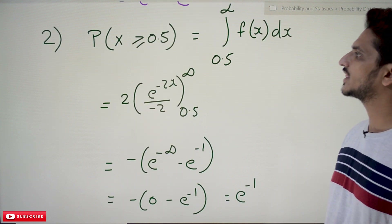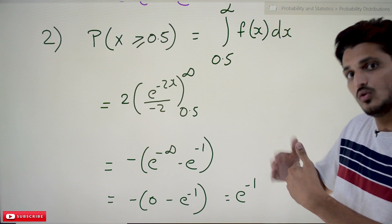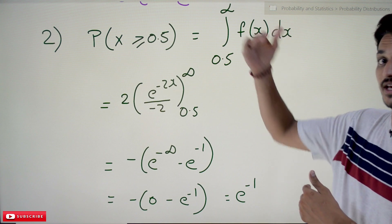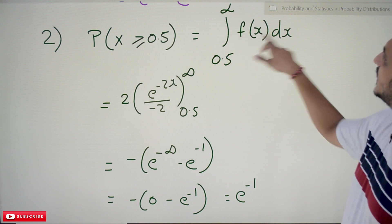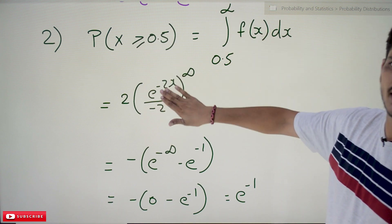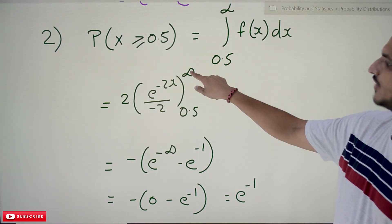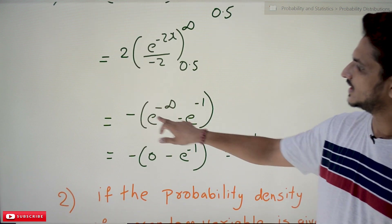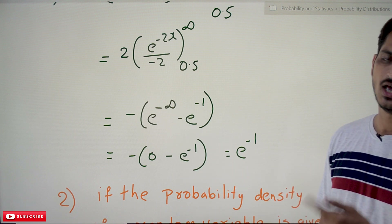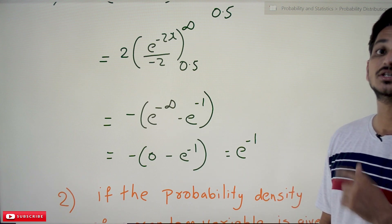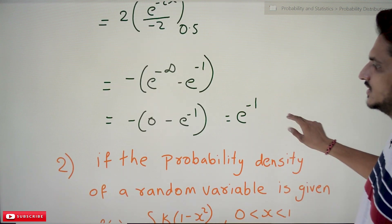For the probability that x ≥ 0.5, we consider the area from 0.5 to infinity. That is the integral from 0.5 to infinity of f(x) dx. Using the same integration result e^(-2x) / (−2), we substitute 0.5 to infinity: −e^(−∞) − (−e^(−1)). Since e^(−∞) = 0, this becomes 0 − (−e^(−1)) = e^(−1). This is the probability value.